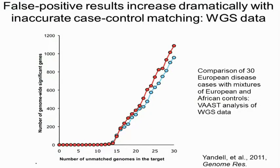This is an exercise we published in our VAST paper last year. We compared 30 individuals of European ancestry as disease cases with mixtures of controls of Europeans and Africans. If the control population is mostly matched, we found very few false positives — there was no actual disease so we shouldn't see any signals. But once we get a larger portion of non-European individuals in our control sample, we get hundreds — even over a thousand — false positive results. This tells us that if we don't properly match case and control samples when looking for rare variants, we're going to have hundreds of false positives.